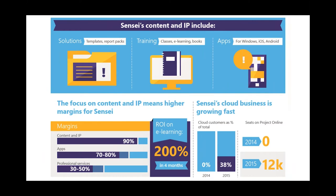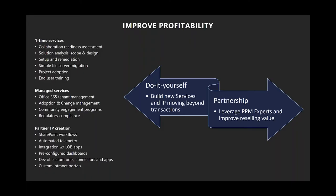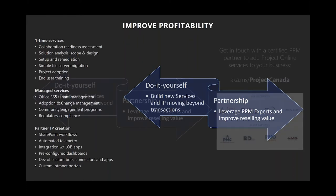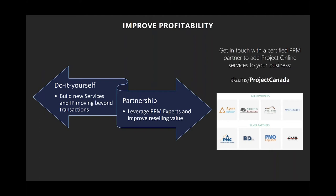That growth came from professional services, content and IP — and the nice thing about content and IP is it's repeatable: build it once, reuse it with every customer. The partners that have done this do very well. The pattern is: start with project, add services, sell more licenses, add more services on top — a lucrative way to seed an account and grow in a natural fashion rather than trying to boil the ocean.